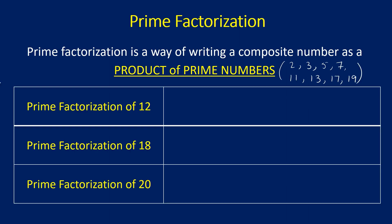Let us see the method of prime factorization. To begin with, let us take the number 12. As I mentioned here on the top, prime factorization is the process of writing a composite number as a product of prime numbers, and the prime numbers between 1 to 20 are listed here in the bracket. So how can you represent 12 as a product of prime numbers? We begin by using the first prime number, that is 2. So 2 into 2 is 4, and 4 into 3 is 12. So 12 can be represented as 2 squared into 3, and therefore 12 is made up of 2 prime numbers, that is 2 and 3.